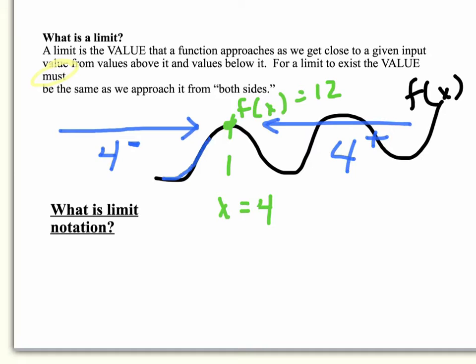Notice, we would be coming in through x, our values of f of x are increasing, at x equals 4 they're 12, and even if we came in from the opposite direction. Well, that leads me to the idea of what does limit notation look like.